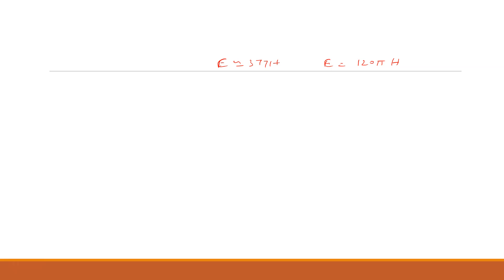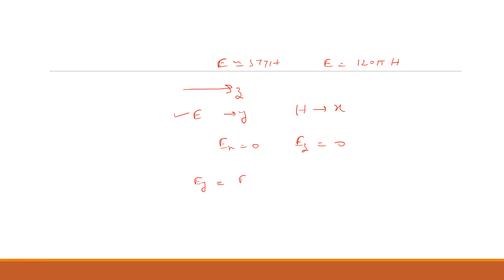This we will prove in this derivation. Now, let us consider a uniform plane wave traveling in the Z direction. Suppose the electric field vectors are along the Y direction and magnetic field vectors are along the X direction. The electric field component along Y direction is given by EY = E₀ cos(ωt − βZ).